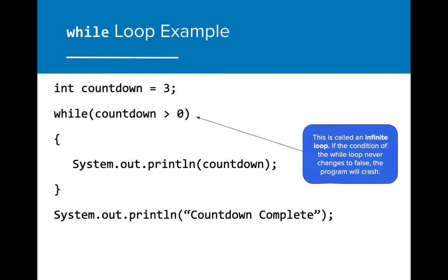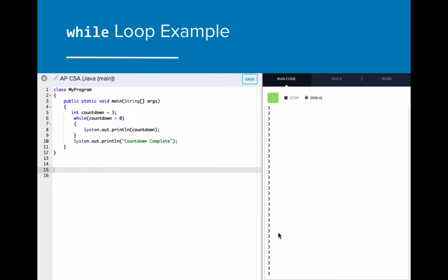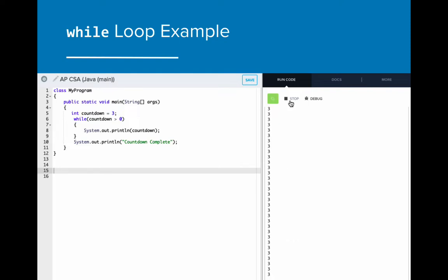When a while loop runs forever, it is referred to as an infinite loop. This generally causes our programs to crash because the compiler isn't prepared to run the program infinitely. When writing while loops, it's important to pay attention to the condition that you are adding so that the program eventually exits. Notice that the countdown continuously prints the number three as the countdown variable doesn't change in value during the while loop. This program will run indefinitely because the countdown variable never changes value.